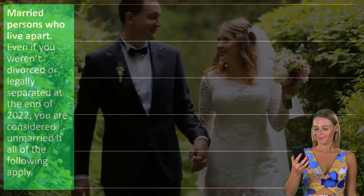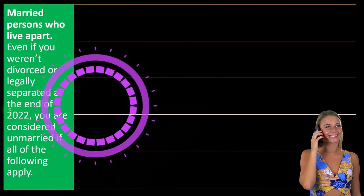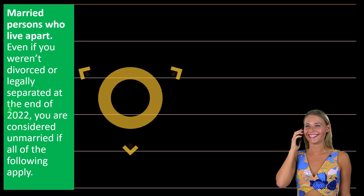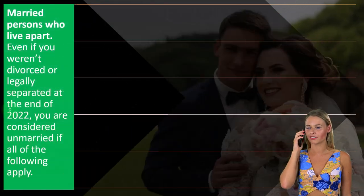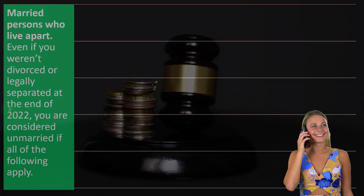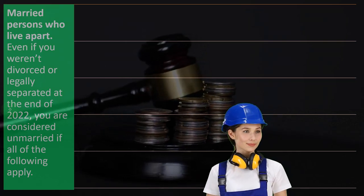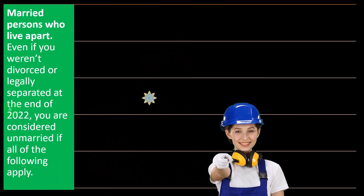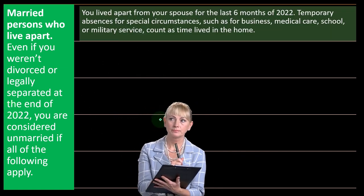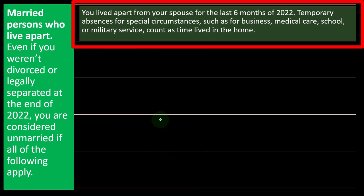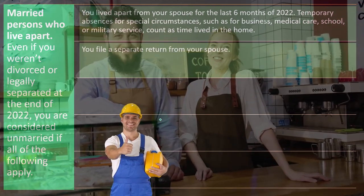Married persons who live apart: we've broken out categories of options if you're single versus options if you're married. But if a married couple is separated, the gray area is whether they are legally separated and can move from married filing joint or married filing separate to options usually only available if single — such as single or head of household. Even if you weren't divorced or legally separated at the end of 2022, you are considered unmarried if all of the following apply: you lived apart from your spouse for the last six months of 2022 (temporary absences for business, medical care, school, or military service count as time lived in the home), and you file a separate return from your spouse.